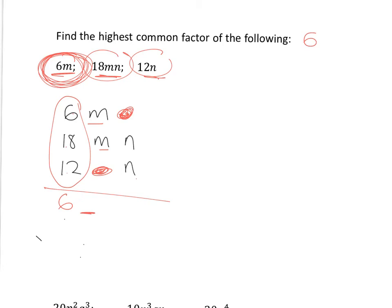And this tells me that 6m can be written as 6 times m. 18mn can be written as 6 times 3 times mn. And 12n can be written as 6 times 2n. And can you see, there's nothing more in these things that they actually have, all three of them in common.